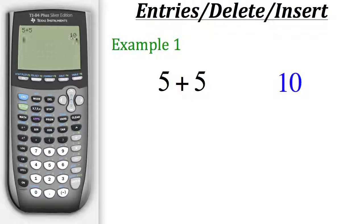And its result of 10 in the row just below it. Now when you're looking at these two, the expression 5 plus 5 on the left here would be considered our entry and the result of 10 on the right side would be the answer.